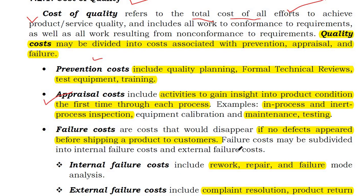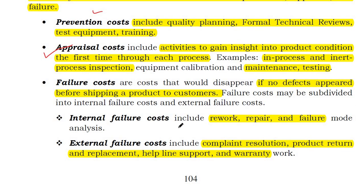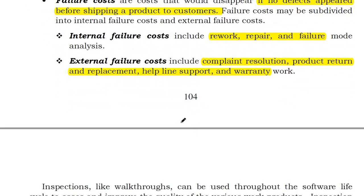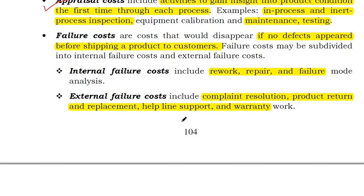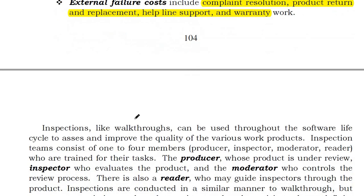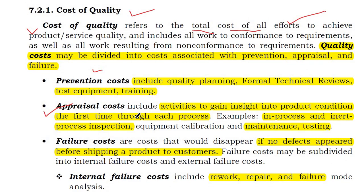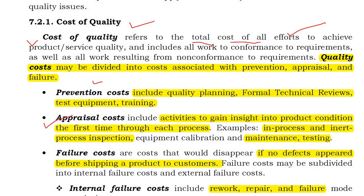Failure cost applies when defects appear before shipping a product to the customer. Failure cost may be internal or external failure. Internal failure includes rework, repair and failure mode analysis. External failure includes complaint resolution, product return and replacement, helpline support and warranty work. These are the factors of the cost of quality.